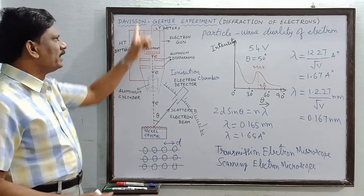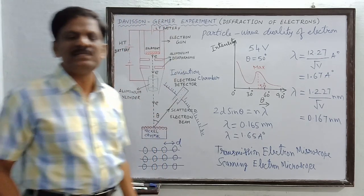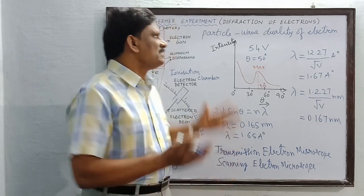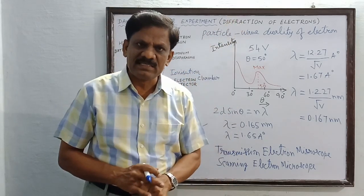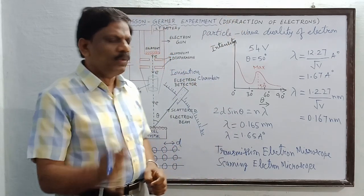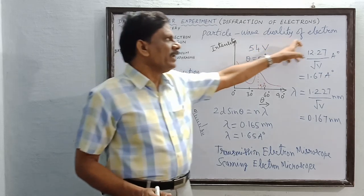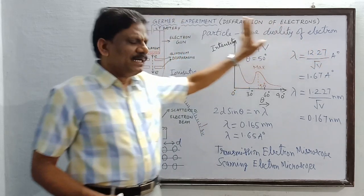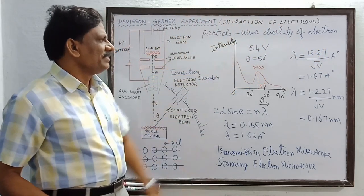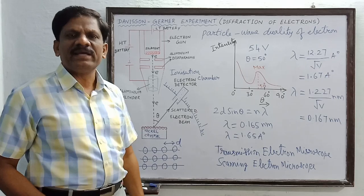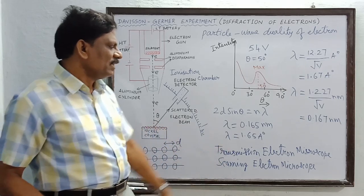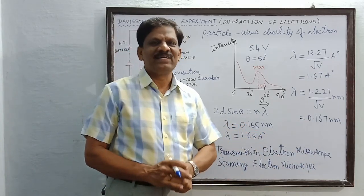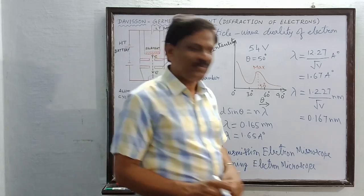The Davisson and Germer experiment is used to study the diffraction of electrons. It proves the wave-particle duality of the electron. The application of the Davisson and Germer experiment is in the construction of the electron microscope. Hope you have understood — thank you.